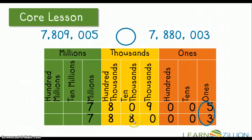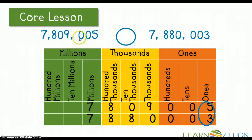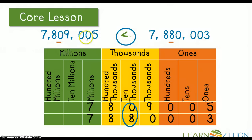Now I'm going to look at the ten thousands place and I notice my first difference. The number 7,809,005 has a value of zero in the ten thousands place, whereas 7,880,003 has an 8 in the ten thousands place. So this number on the bottom is going to be greater than the number on the top, but the top number comes first in my number sentence. So I would read it: 7,809,005 is less than 7,880,003. I would put in the less than sign because of that digit in the ten thousands place.